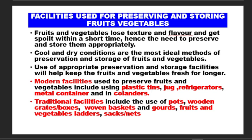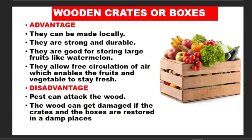Let's look at the various facilities we can use to preserve or store fruits and vegetables. We have, for example, plastic tins, jugs, refrigerators, and metal containers. We also talk about the traditional facilities, among which are pots, wooden plates, and woven baskets, among others.